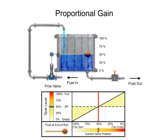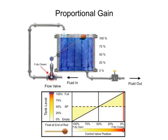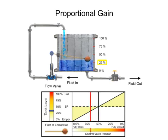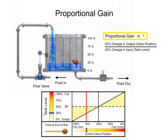The valve is actuated by the float to a fully open position when the tank level is low, and fully closed when the tank level is full. Opening the drain valve increases the load demand, which causes the tank level to drop by 25%. The float drops and the valve opens 25%, which allows more fluid flow to enter the tank. A gain of 1 is demonstrated in this mechanism, since the 25% change of input, or tank level, results in a 25% change of output, or valve position.